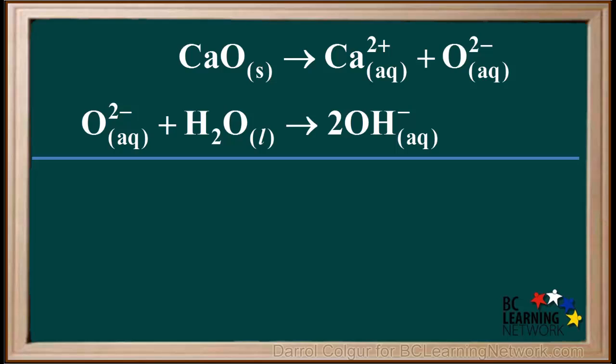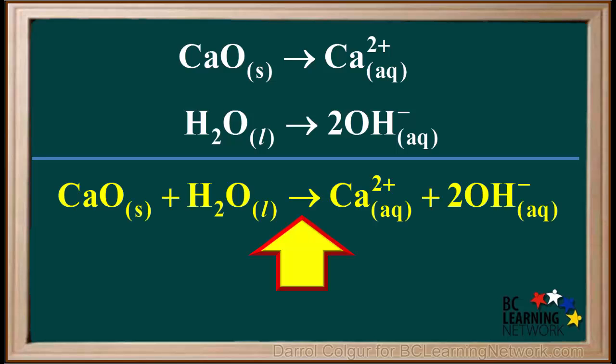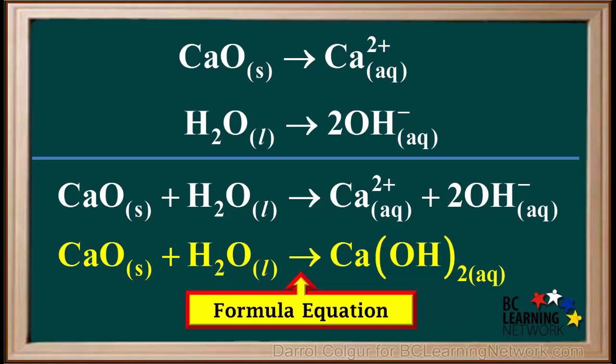We'll add these two reactions together. We see that O2- is on both sides, so it can be cancelled out. These now add up to give the net equation CaO solid plus water gives Ca2+ plus 2OH-. This can be shortened to give the formula equation CaO solid plus water forms Ca(OH)2 aqueous.